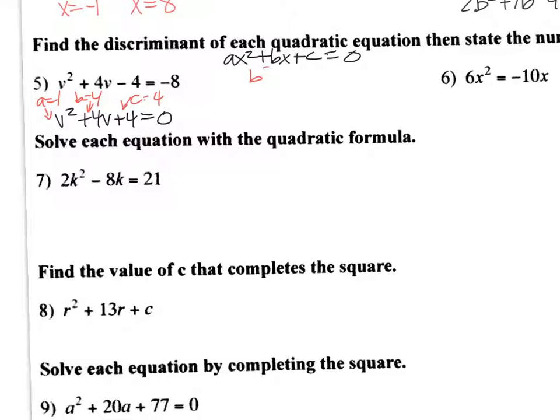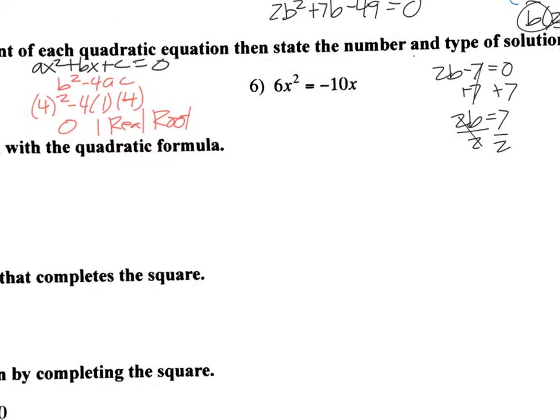Then I just plug in to the discriminant. Now the discriminant is the b squared minus 4ac. So I do 4 squared minus 4 times a, which is 1, times c, which is also 4. If I do that, I get 0. Well, if I get 0, that means it has one real root. One real root. And remember, we call that a double root.